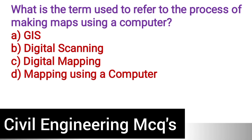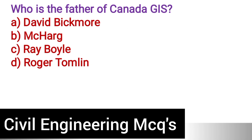The first question: What is the term used to refer to the process of making maps using a computer? Option A: GIS (Geographic Information System). Option B: Digital scanning. Option C: Digital mapping. Option D: Mapping using computer. The correct answer is option A, GIS – Geographic Information System.